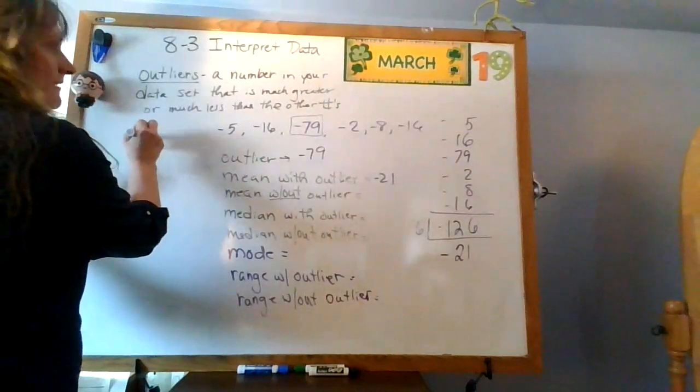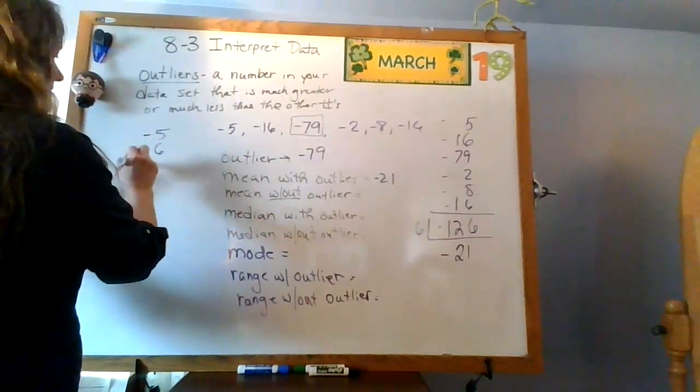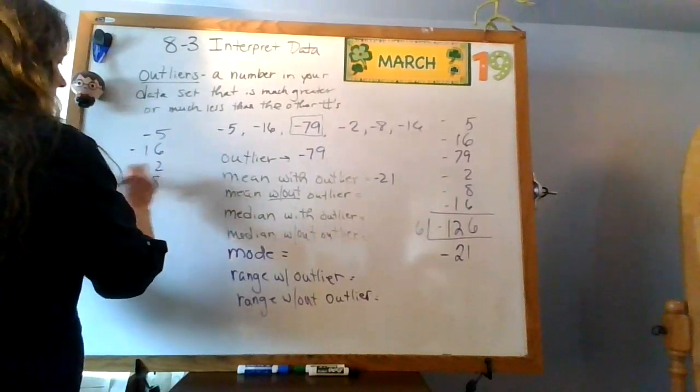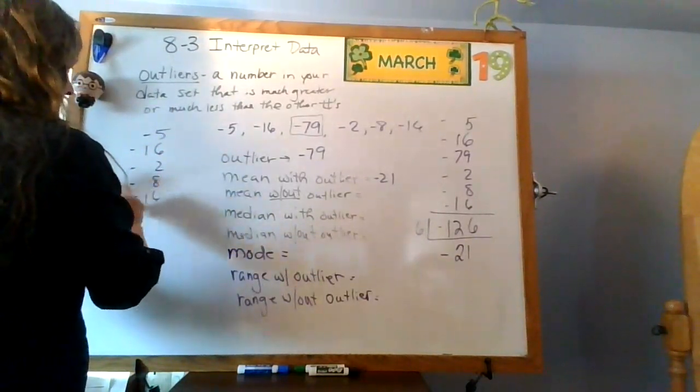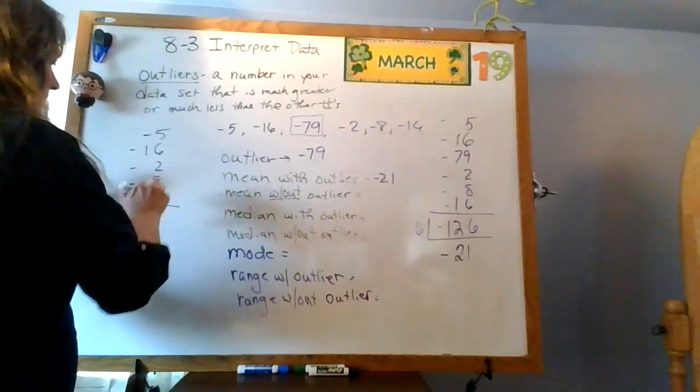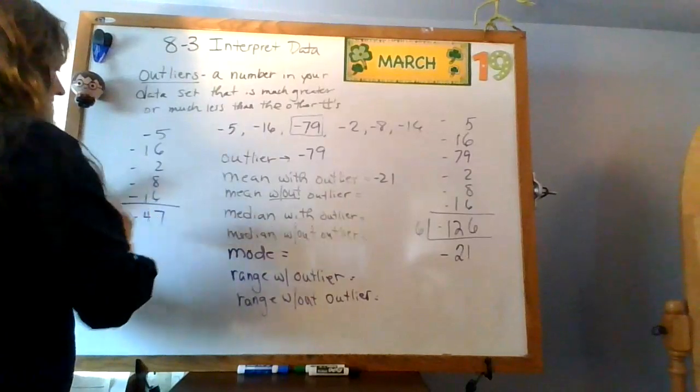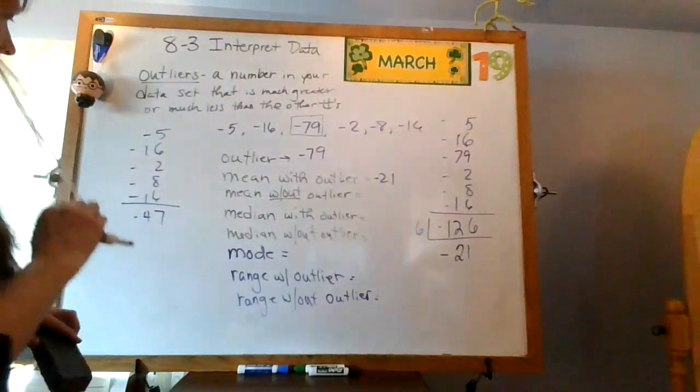So I would have negative 5, negative 16, negative 2, negative 8, negative 16. 11 plus 10 is 21, 27, 2, 3, 4. So I would have negative 47, okay?